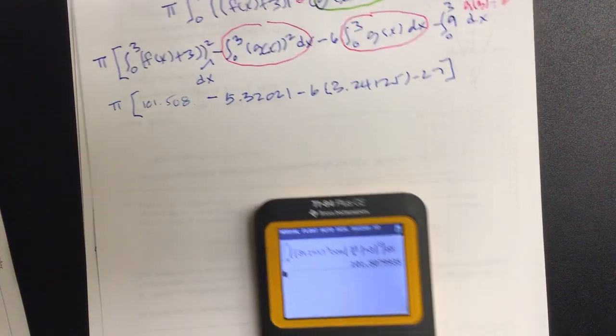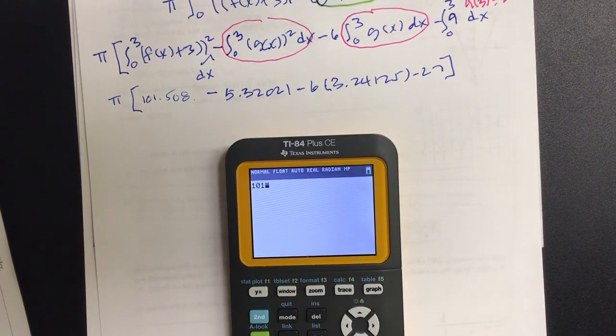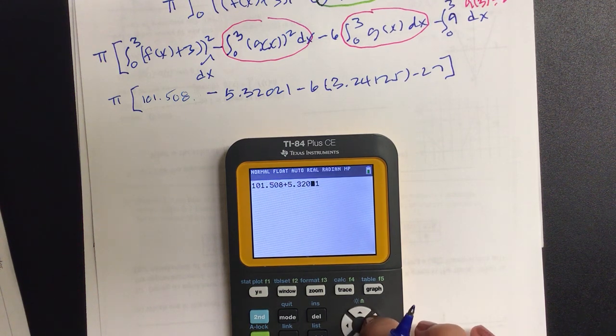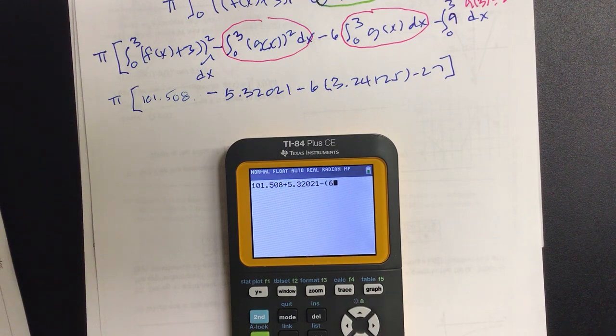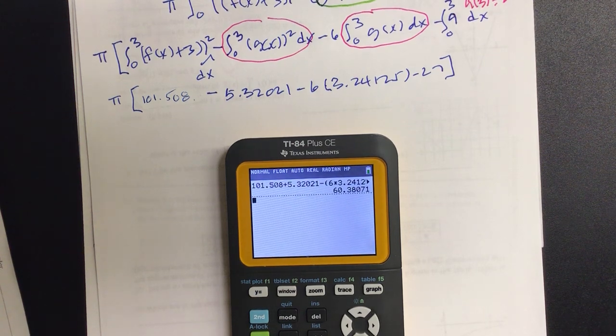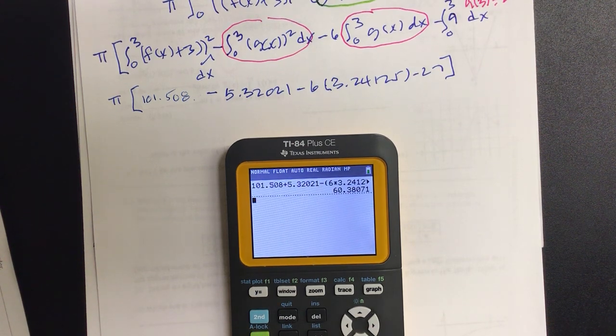Now let's type these in: 101.508 plus 5.32021, and that was a minus, and then we have 6 times 3.24125 minus 27. That's more like it, and then multiply that by pi.